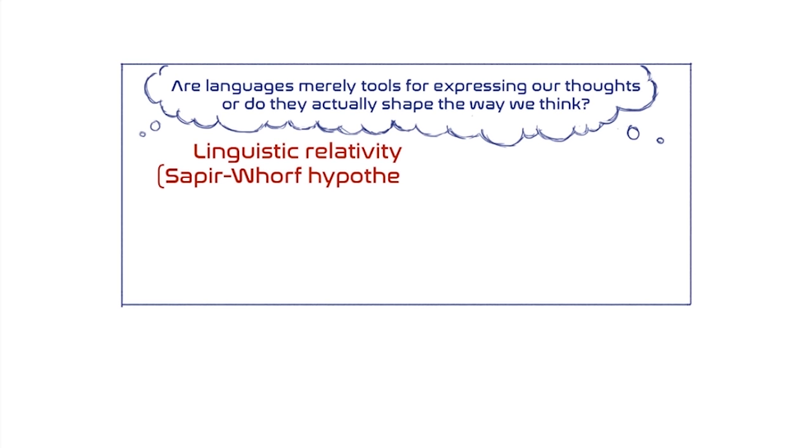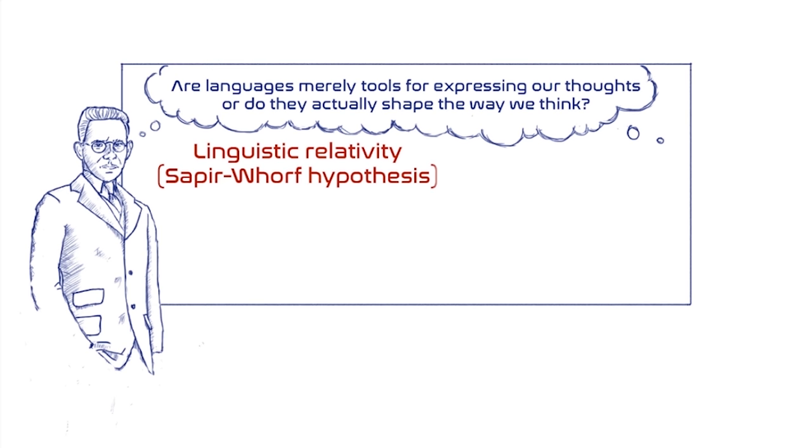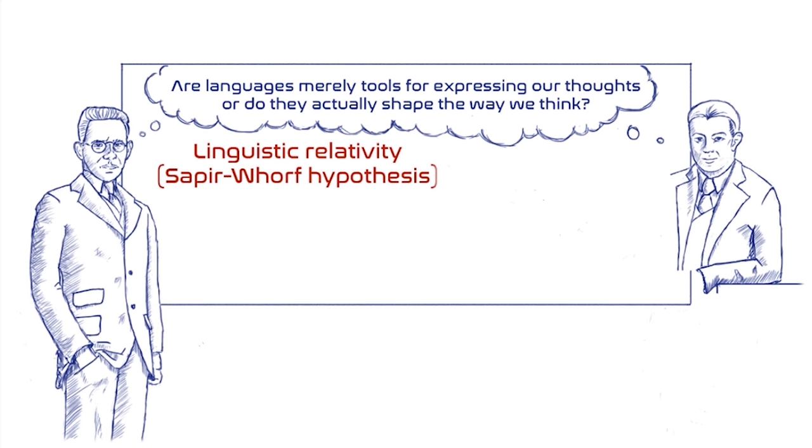Sapir and Whorf were by no means the initiators of this idea, but were the ones that brought a lot of attention to it. Sapir's presumption was that languages differ in the way they structure reality, but the hypothesis that language shapes thought was not fully developed until the works of Benjamin Whorf.